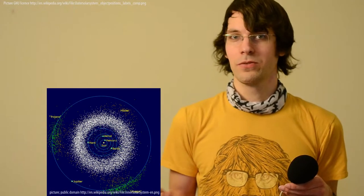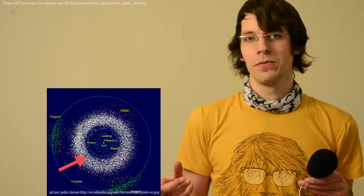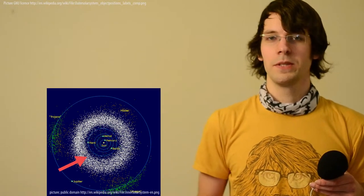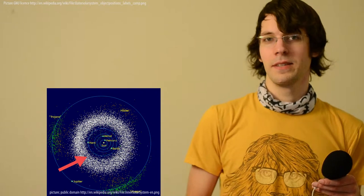If we then take a look at a smaller scale, we find so-called asteroids. Those are still pretty huge, however they do not have enough mass to get a round shape. So they're kind of stone-like. If we take a look into our solar system, we find a lot of asteroids in the asteroid belt.